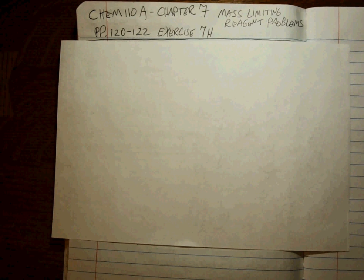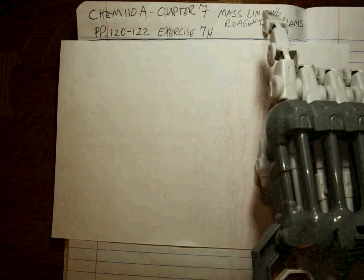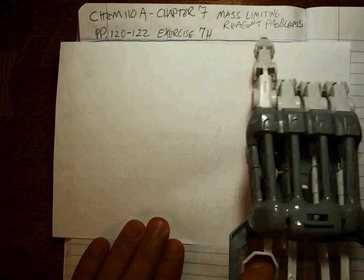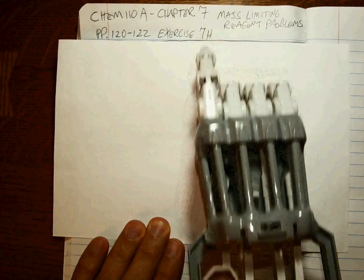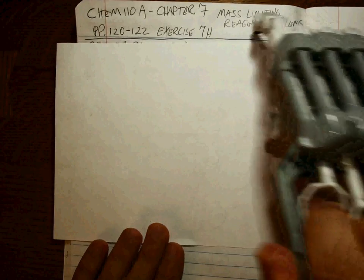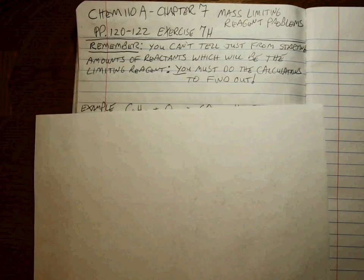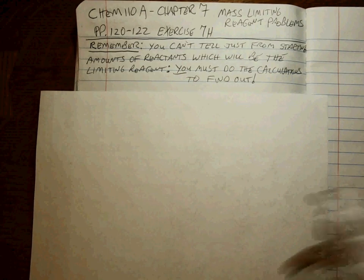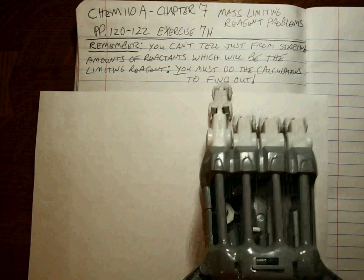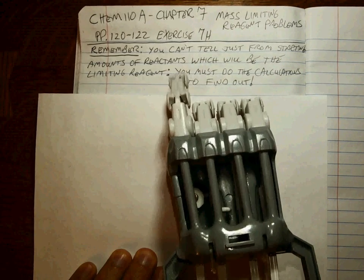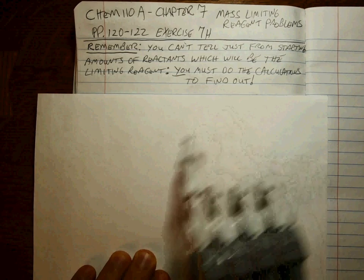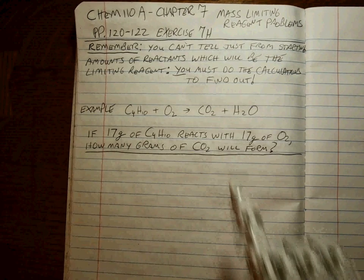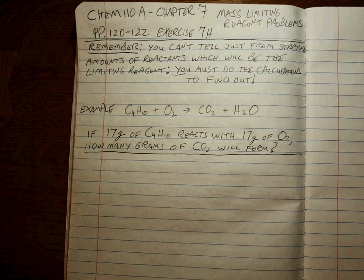We're back. The last section in chapter seven is mass limiting reagent problems — pages 120 through 122, exercise 7H. The main point here is that you can't tell just from the starting amounts of reactants which will be the limiting reagent. You must do calculations to find out.